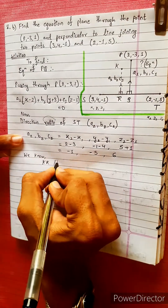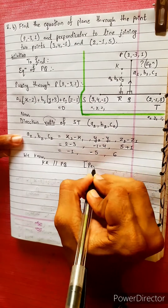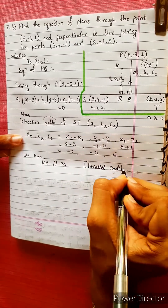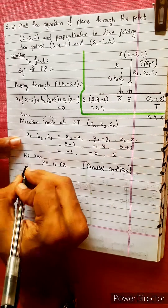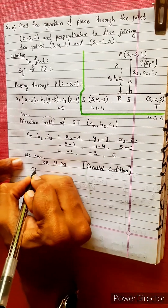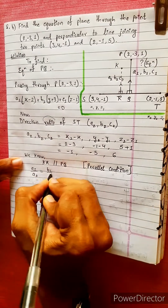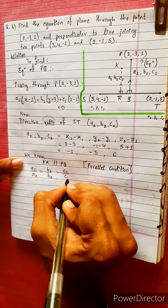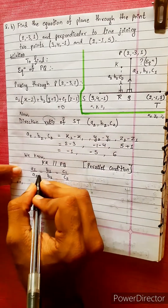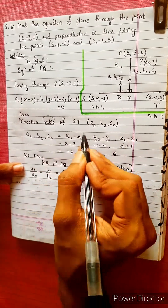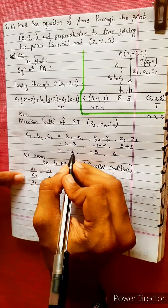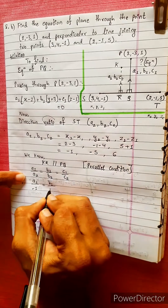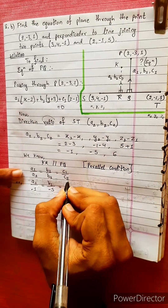KR is parallel to PQ. Using the parallel condition, the direction ratios must be in proportion: A1/A2 = B1/B2 = C1/C2. The values are: A2 = -1, B2 = -5, C2 = 6.